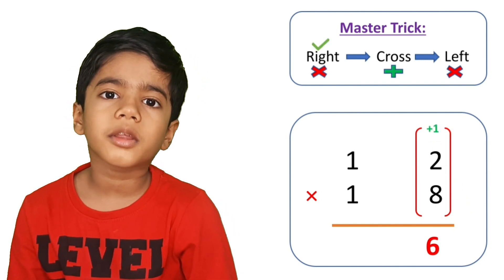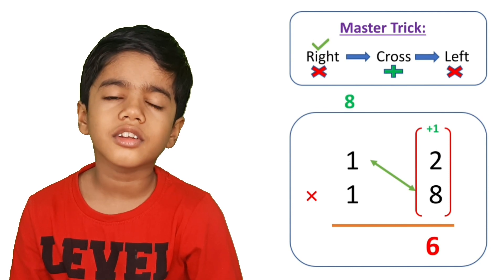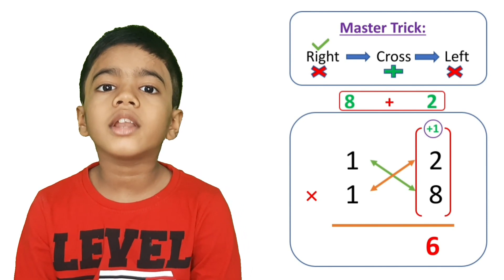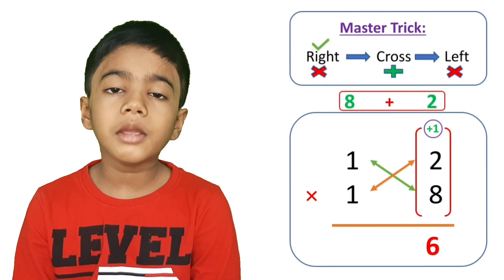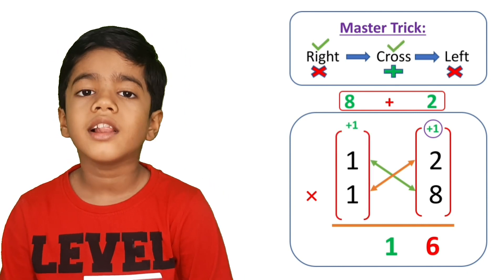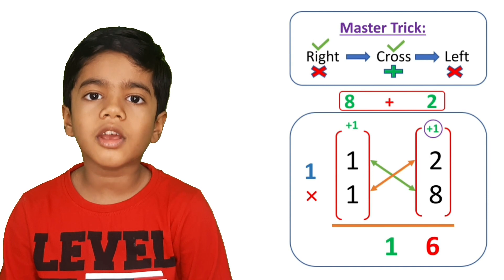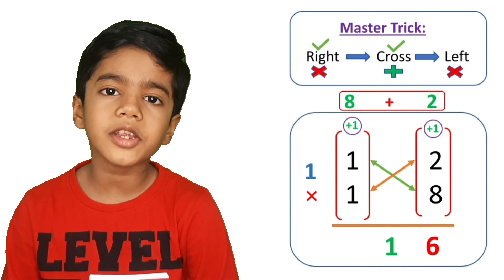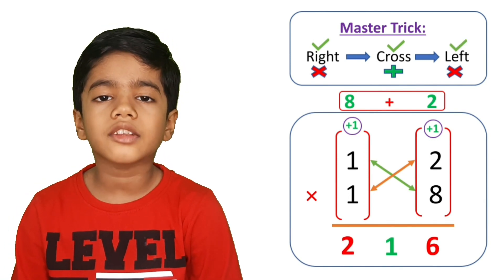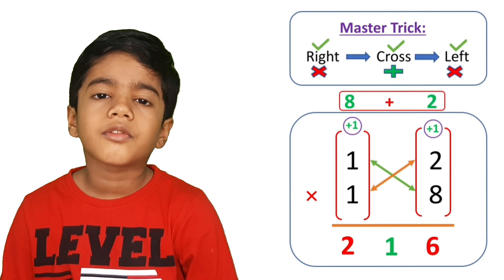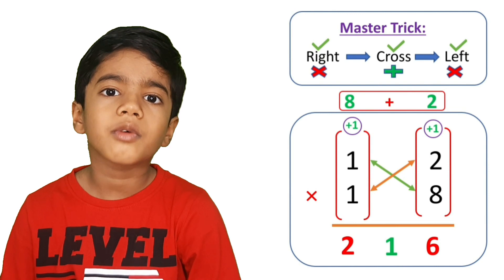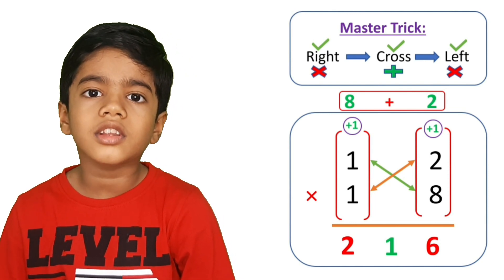Keep 1 here and take 1 carry. Now let's multiply left side number: 1 times 1 is 1, but there is a carry, so 1 plus 1 equals 2. Write here 2. So the answer is 216. Friends, if you want to do this multiplication in two seconds, watch my previous video. The link is in the video description.